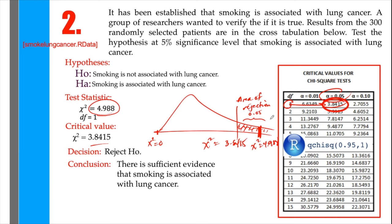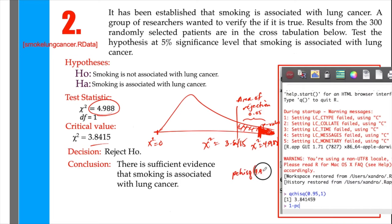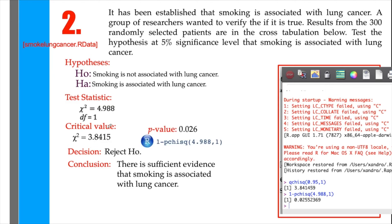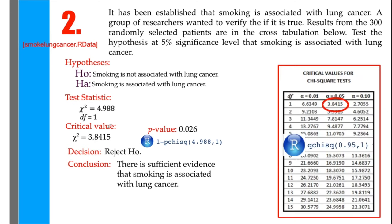For the p-value, we compute the area to the right of 4.988 using 1 − pchisq(4.988, 1) in R, giving a p-value of 0.026. Since this is less than 0.05, we reject the null hypothesis.